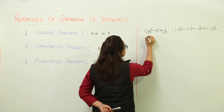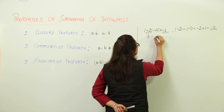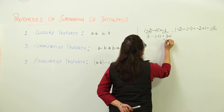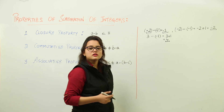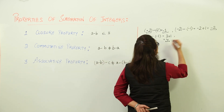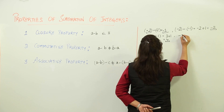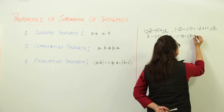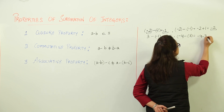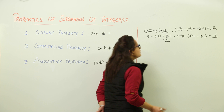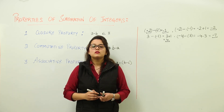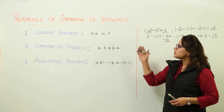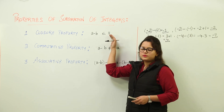Moving on with the examples, next we have 3 minus minus 1. Minus minus becomes plus 1, so you get 3 plus 1 equals 4. That is again under the integer set. The last case would be minus 4 minus 3 — that means subtracting a positive integer from a negative integer — you get minus 7. Again the result is a value in the integer set. So subtraction of any two integers is going to be lying in the integer set only.